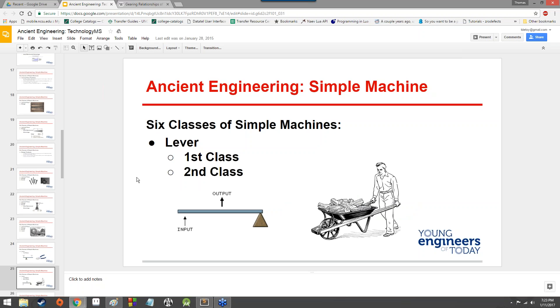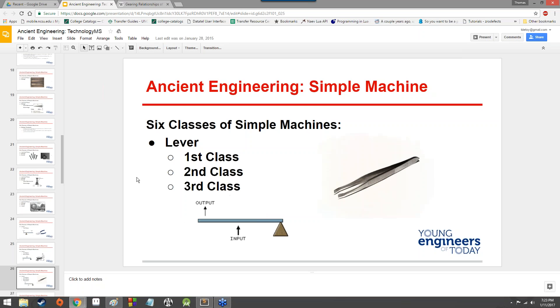You've got the second class where the fulcrum point is on the ends, and the output is between the input and the fulcrum points, which allows you just to sort of reduce the weight of something, in the case like a wheelbarrow here. And you've got the third class where the fulcrum point is at the end and the input lies between the output and the fulcrum point, and that can be something like tweezers. It reduces the amount of multiplication of force from input to output. But on the other hand, it still allows a pretty good amount of force, but it also allows a great amount of dexterity.